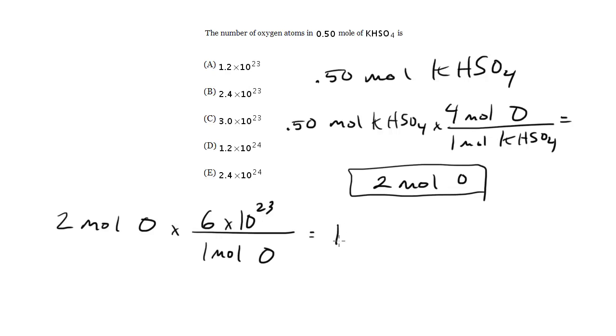So I do that, I get 12 times 10 to the 23rd, which you could make a little bit smaller by moving this decimal point over and we get 1.2 times 10 to the 24th atoms in this case. And we go and look at the choices and that's choice D, right?